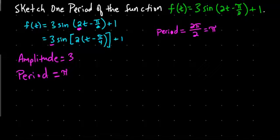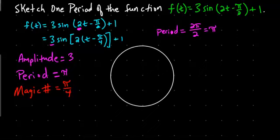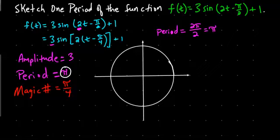And I want to introduce something here called the magic number. And the magic number is simply take your period and divide by 4. Pi over 4. And what that is going to tell me is, if you look at the unit circle, that's not what I wanted. If we look at the unit circle here, so this thing has a period of pi.